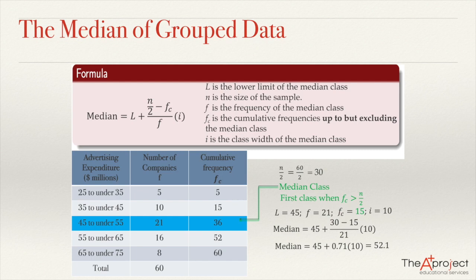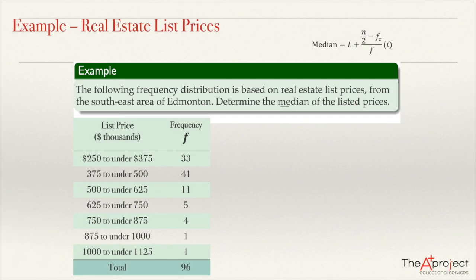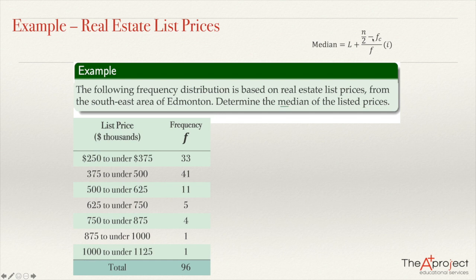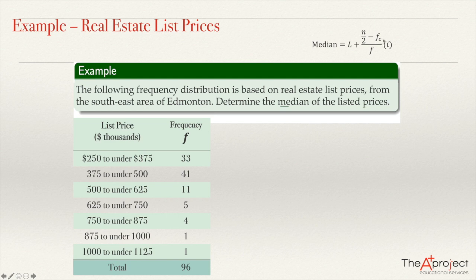Let's see another example to make this clearer. Here is another frequency distribution that you should know because you saw this in another video when I was computing the mean of this distribution. But now we are going to estimate the median. The formula is the one we have here: median equals L plus n over 2 minus Fc over F, multiplied by the width of the class. The first thing is to know where the median class is, and to know the median class it will be a good idea to get the cumulative frequency.